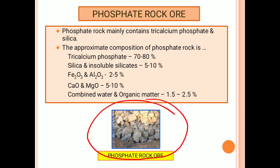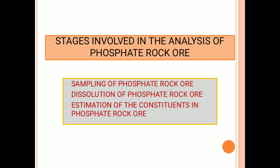Here you can observe the image of phosphate rock ore. As we discussed about so many constituents in different ores like iron ore, manganese ore, chromite ore — I wish to conclude as early as possible, because you have some knowledge about the determination of constituents present in ores. The stages involved in the analysis of phosphate rock ore are the same.